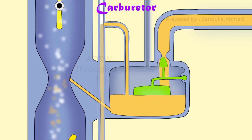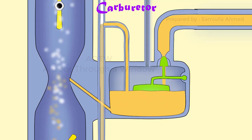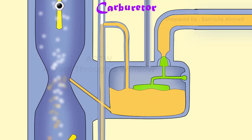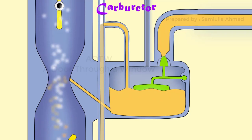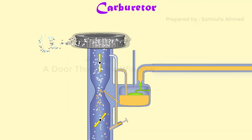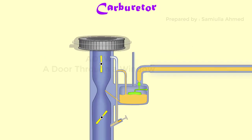When the designed level of fuel is reached, the float closes the fuel supply valve, thus stopping the additional fuel flow from the supply system. The float chamber is vented either to the atmosphere or upstream side of the venturi.